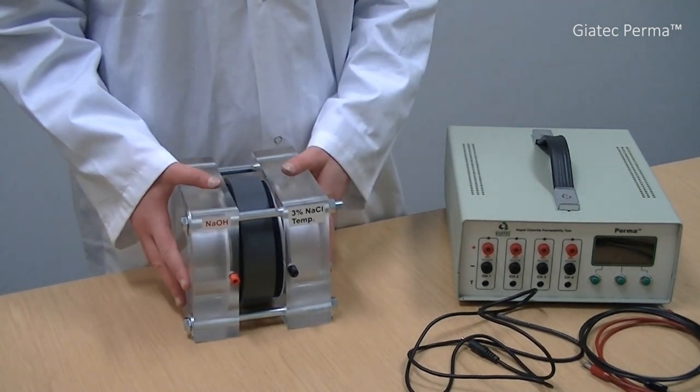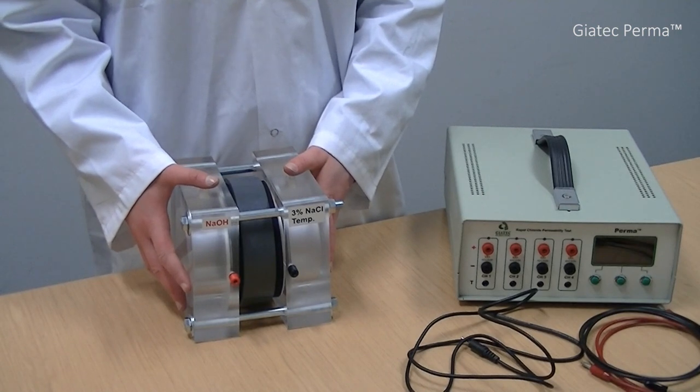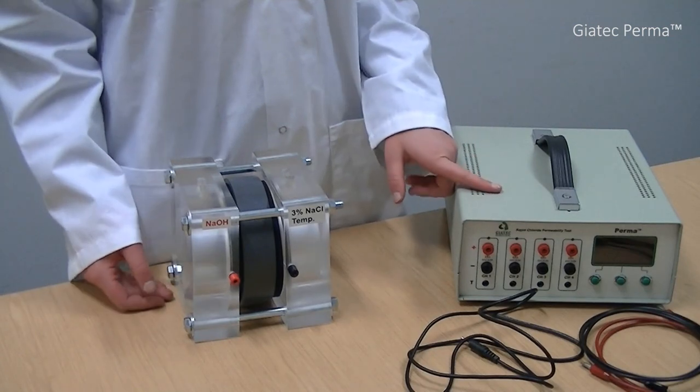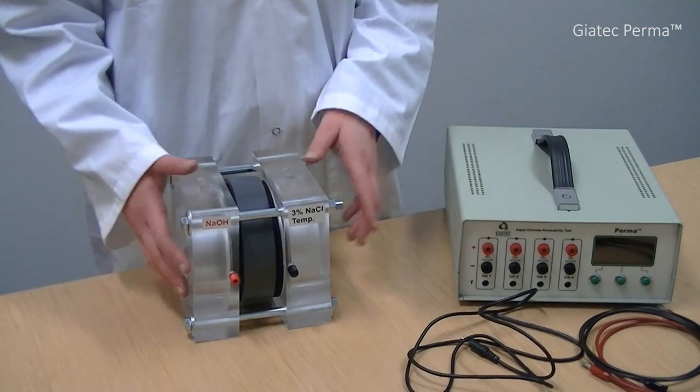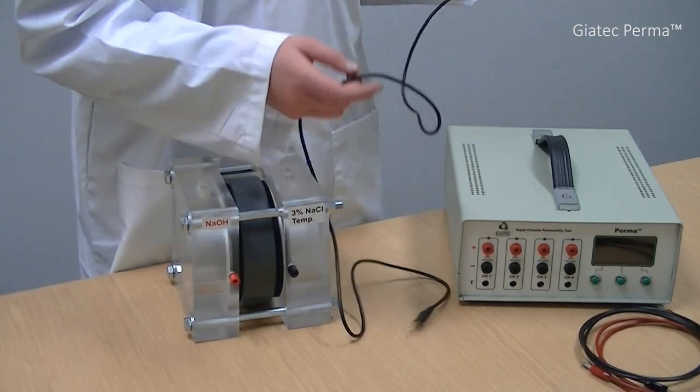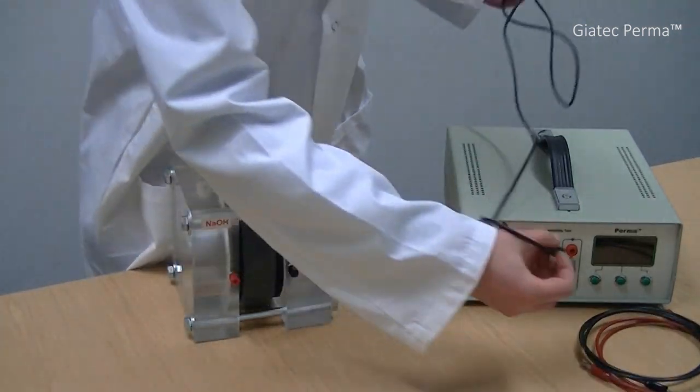Before I connect the cells to any cables or the cables to the device, I have to consider some safety issues. First, I have to turn off the device to avoid electric shock. And second, I should place the temperature sensor in the cell with the black jack, which is connected to the negative terminal.